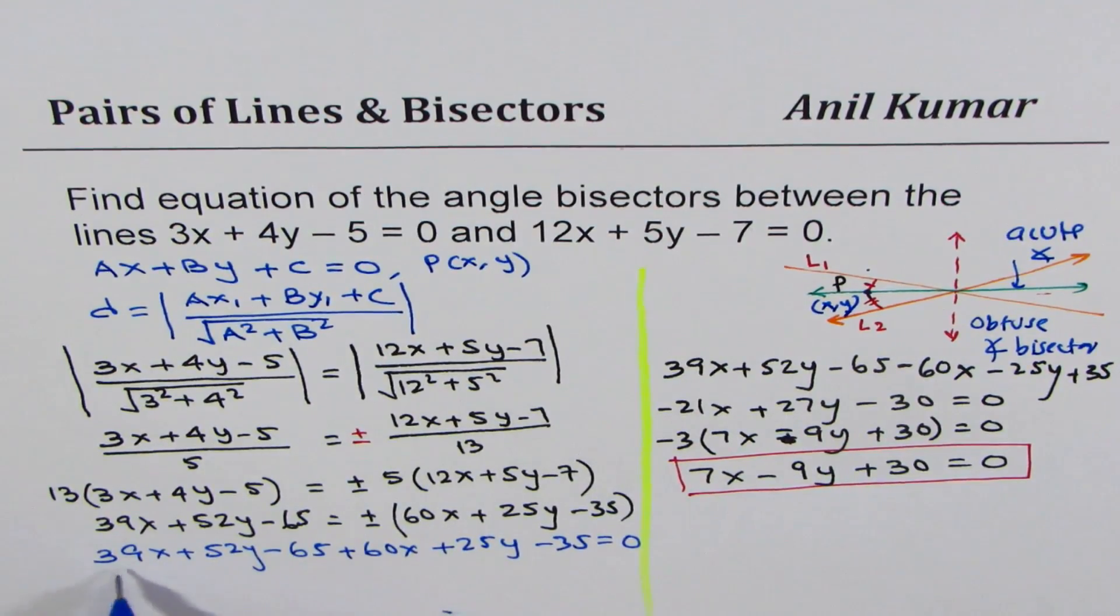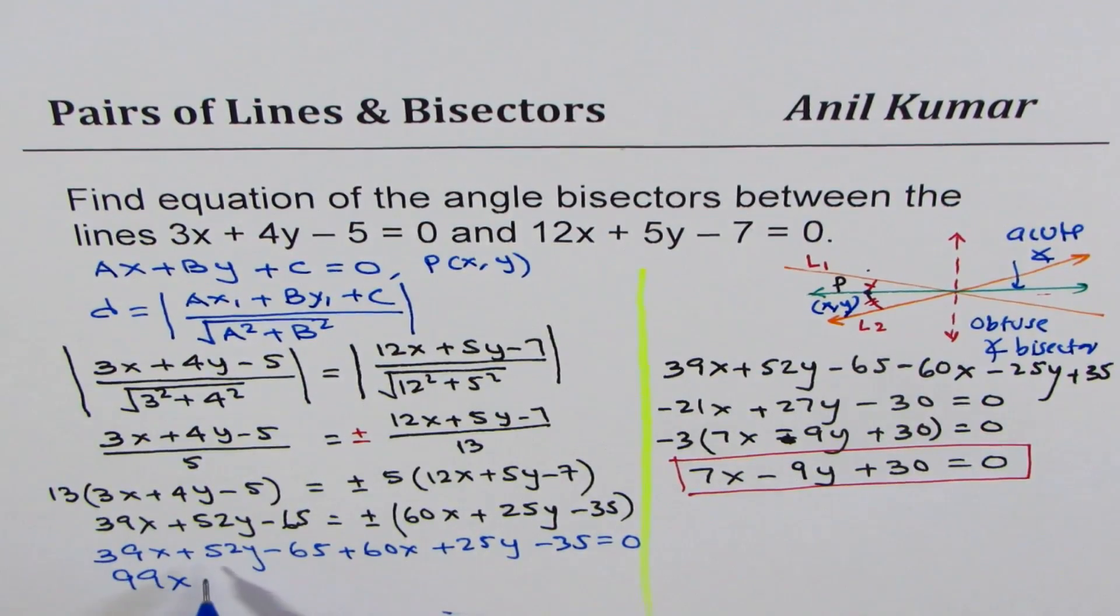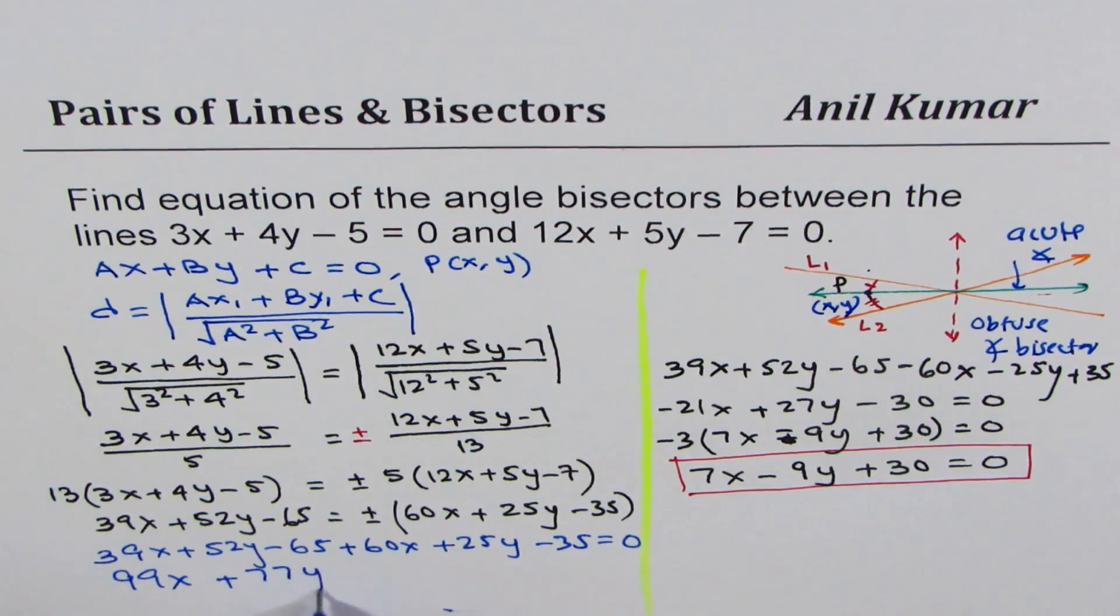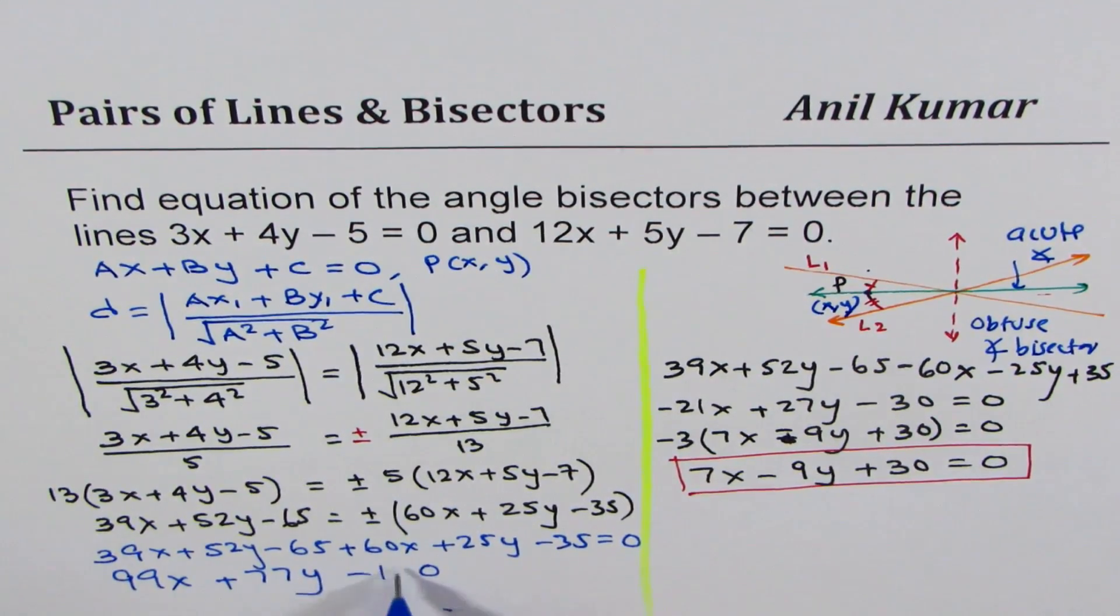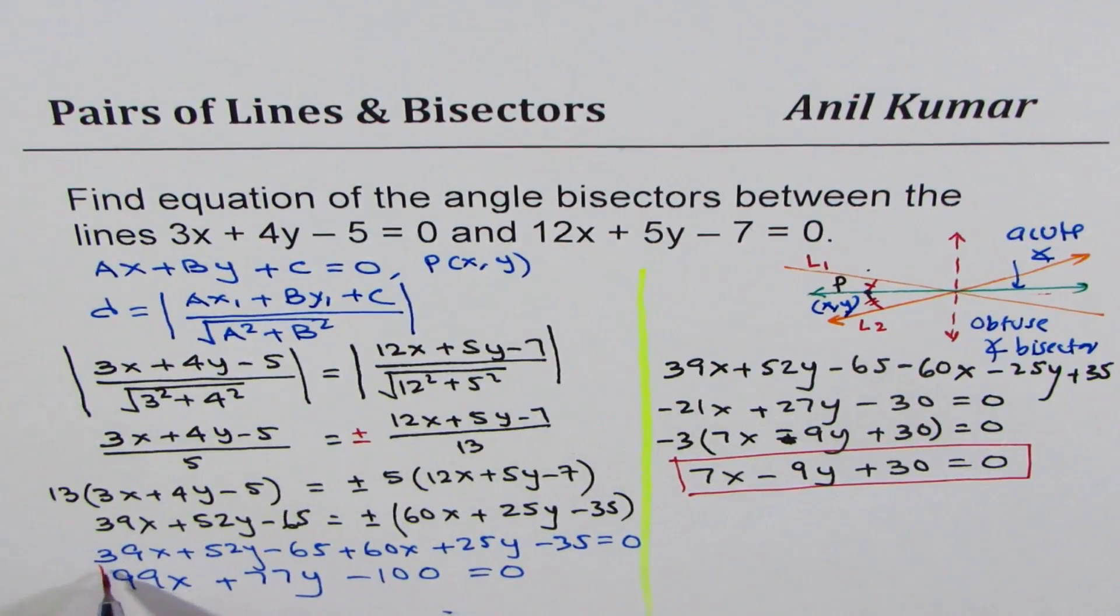So we get 99x, then 52 + 25 = 77y, and for the constant -65 - 35 = -100. This gives 99x + 77y - 100 = 0 as the second equation.